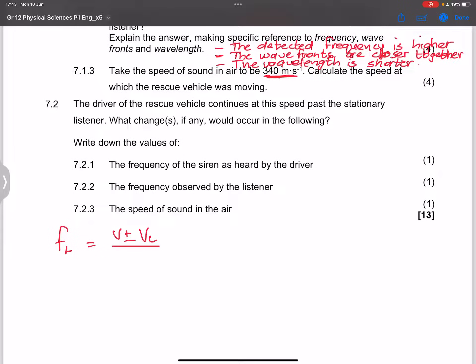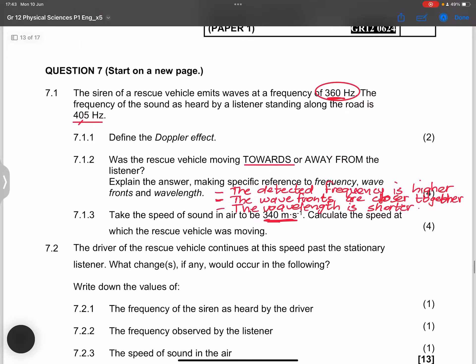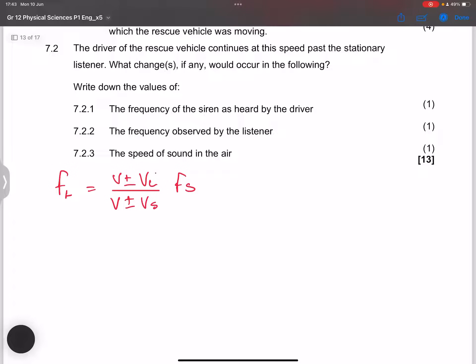That's V plus minus Vs times Fs. So notice in this case, we know that our listener was stationary. So that tells us that that's going to be zero. So we've got V divided by V minus Vs. And for those of you that have seen me do this section in the easiest way possible, you know that we want a higher detected frequency. So this needs to be an improper fraction. So that has to be minus, times Fs.